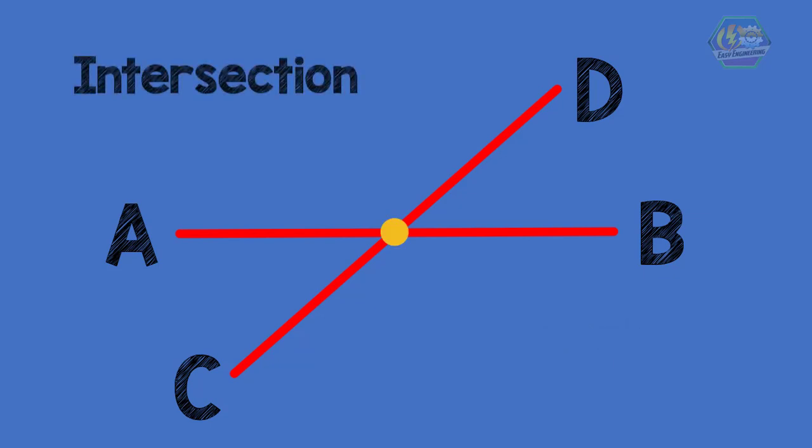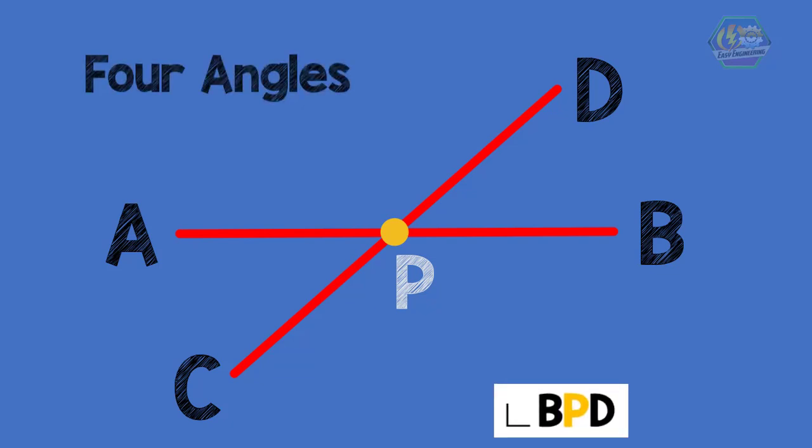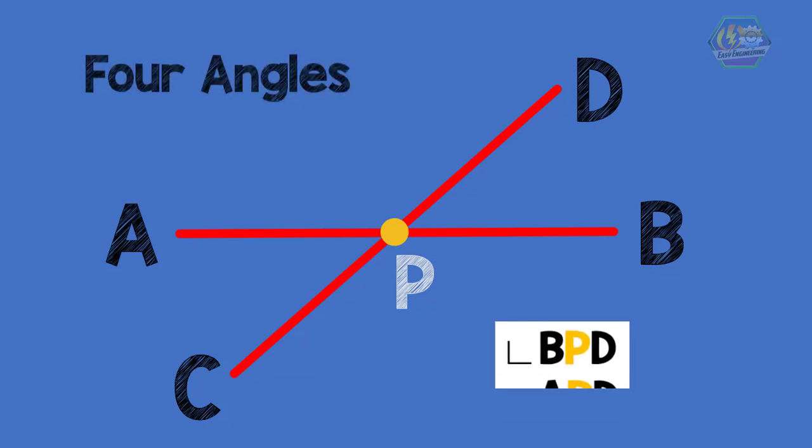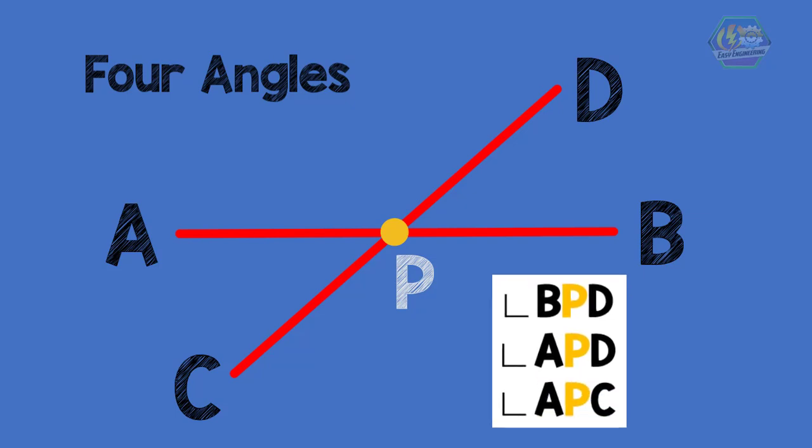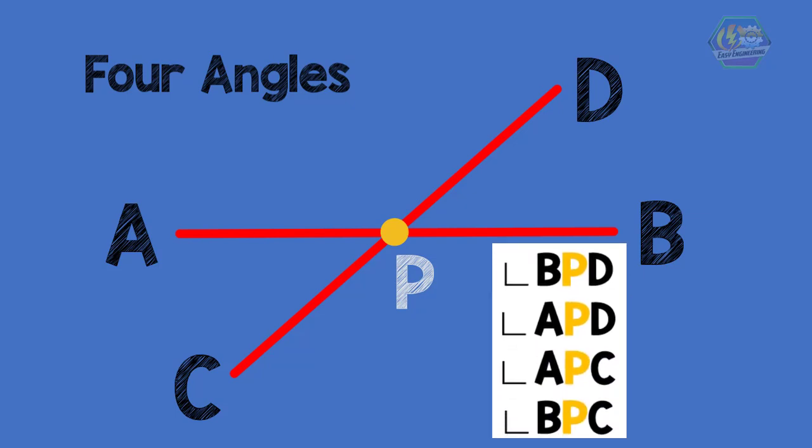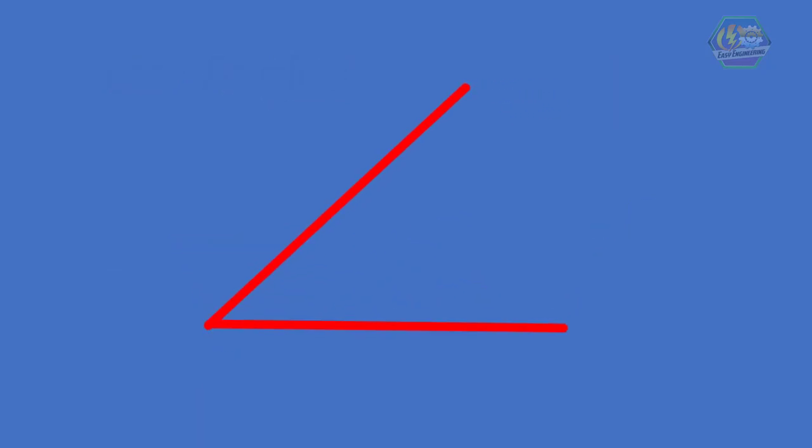Now for this situation, let's name the intersection as the point P. Also, when two lines intersect they form angles. So in this example there are four angles: angle BPD, angle APD, angle APC, and angle BPC.